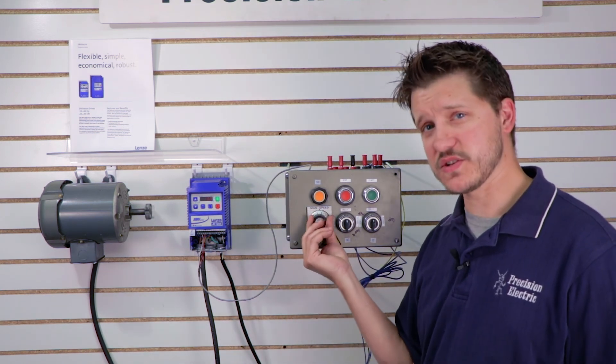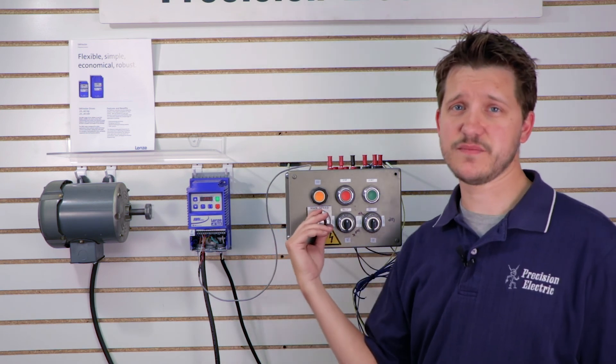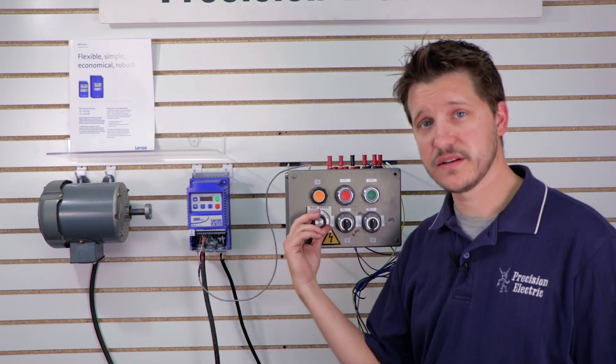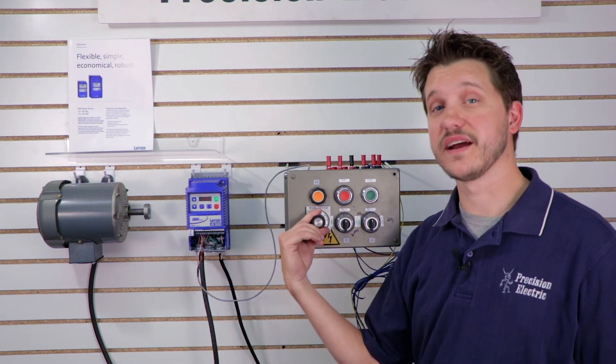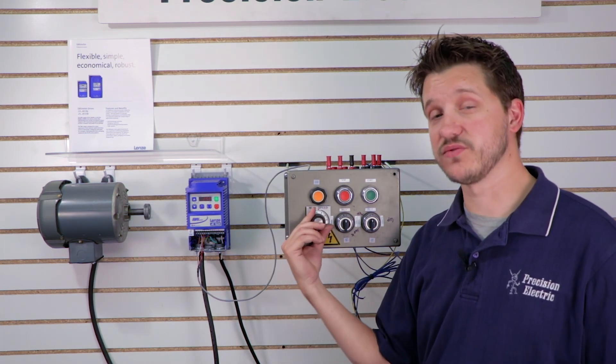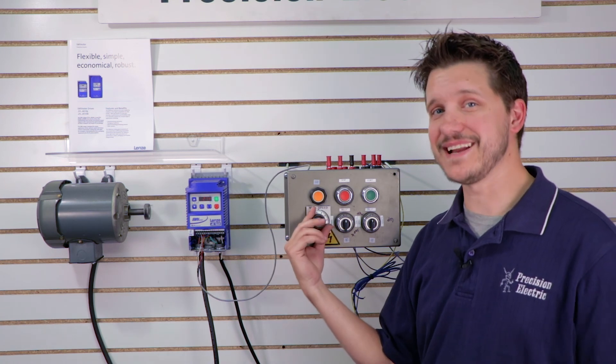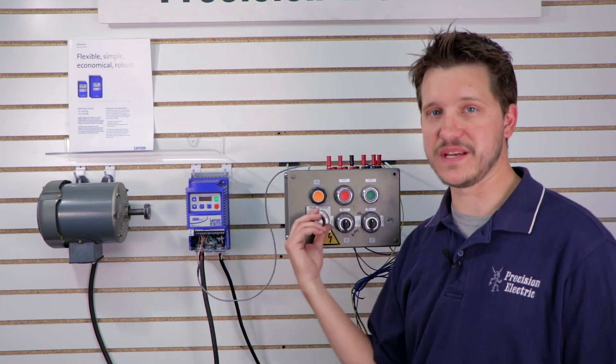And it does follow me pretty close because my acceleration and deceleration times are really really fast. So I can actually extend those out. In other words, if this is speeding up or slowing down too fast I can actually go in there and adjust parameters 104 and 105 to extend that out if I wanted to take more time between my speeds.